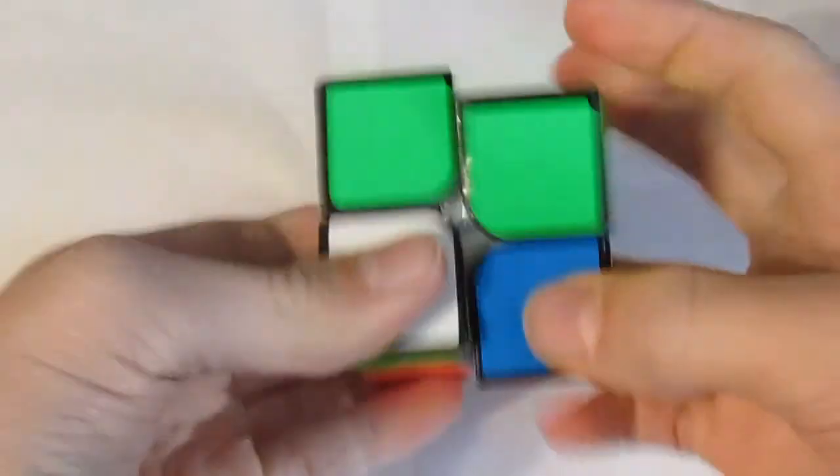The next part of the year-end review is showing you all my mains. So let's start out with 2x2. For 2x2, I have the MF2RS. It's a very good cube. It's very loose, which I really like, because I like to move my hands fast when I'm solving 2x2.